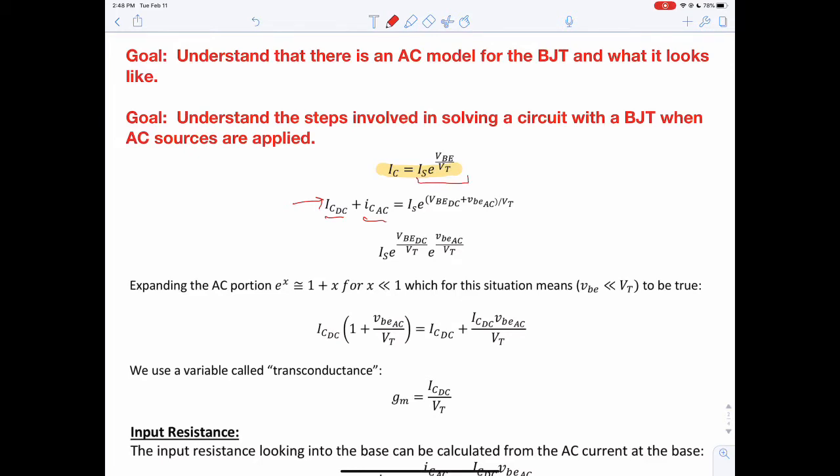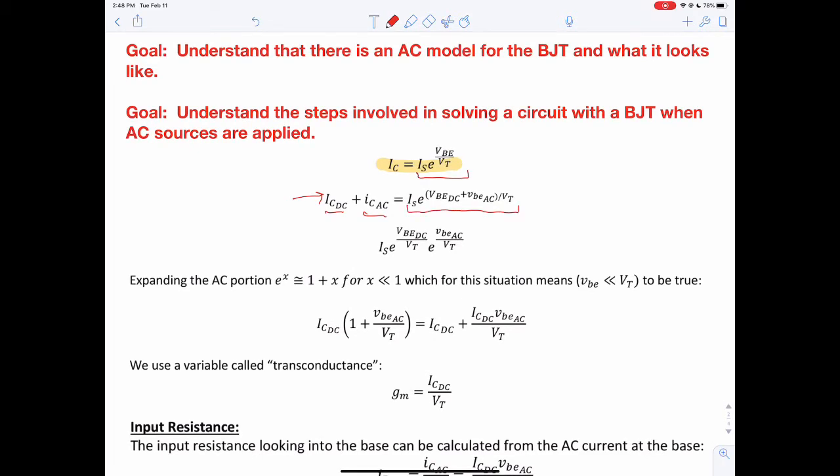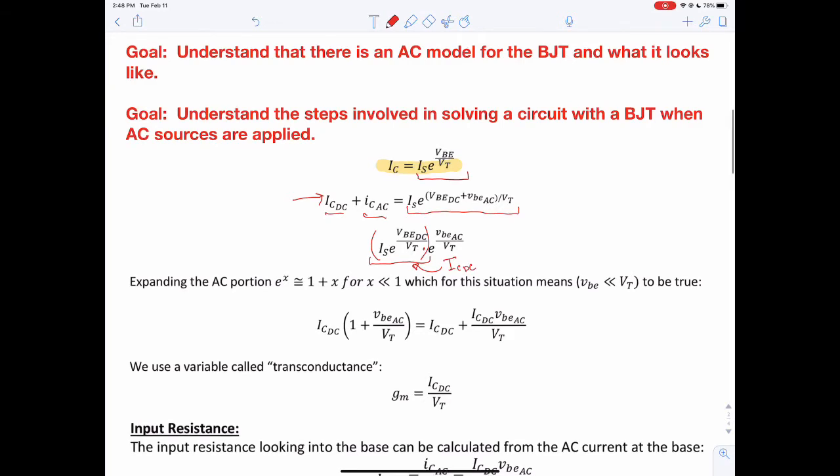Using this IS equation, that becomes this where we've added in both the DC and the AC values across VBE. If you remember, when you have e raised to the subscript and they're an addition in there, that is the same as a multiplication. When we look at this portion right here, we notice that this is again back to the DC value of ICDC. We can expand this e if you remember that property is approximately 1 plus X for when X is super small.